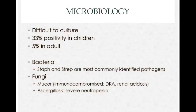It's very difficult to culture. Studies show about 33% of cultures are positive in kids and about 5% in adults. The most common culprits, as you'd expect, are staph and strep. In immunocompromised patients you can see mucor, which is a deadly infection, and aspergillosis, which is seen in patients with severe neutropenia.